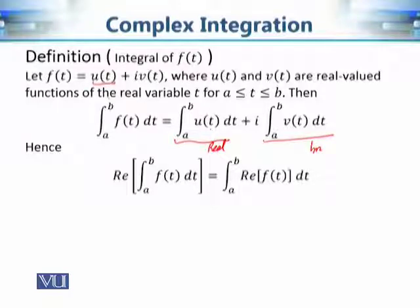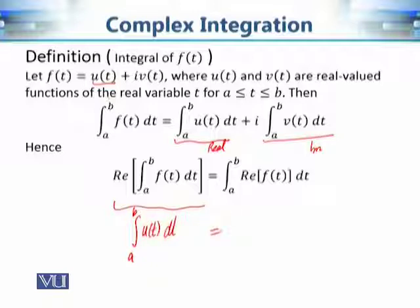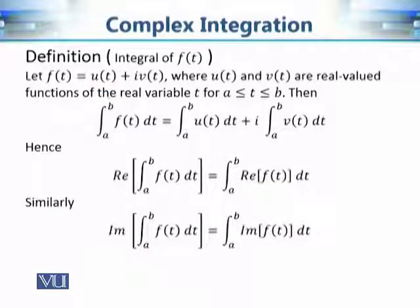The real part of f(t) is u(t). So the real part of the integral from a to b equals the integral of u(t) dt from a to b. It's a trivial statement but sometimes very useful. Similarly, the imaginary part of the integral is equal to the integral of the imaginary part. This holds when integrating a complex-valued function of one variable over the real interval a to b.